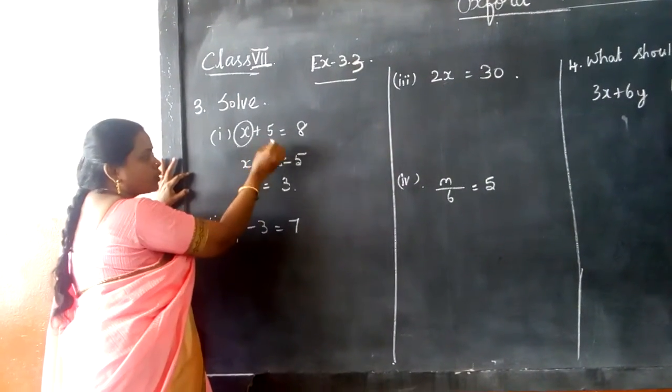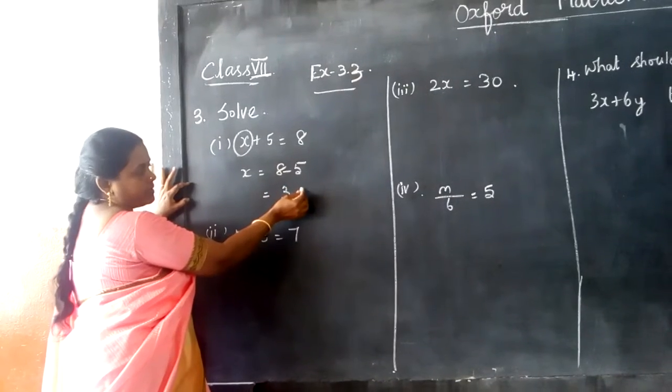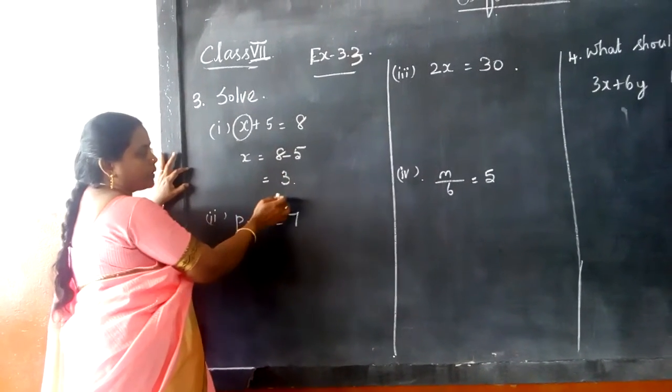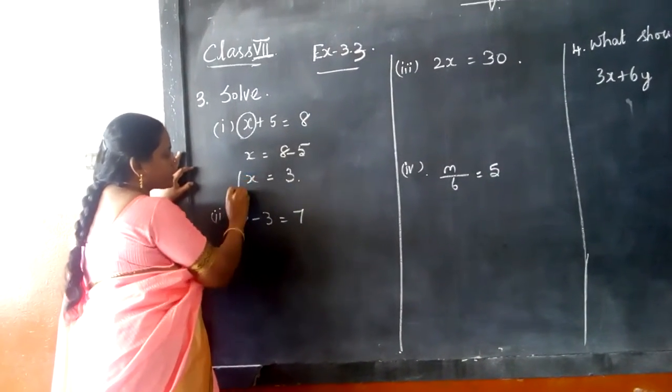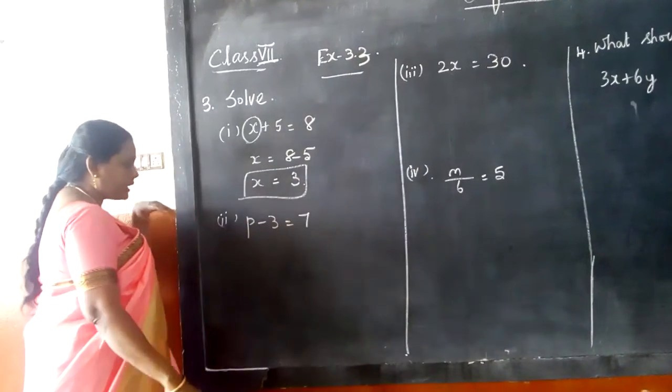So 8 minus 5, when this 5 goes to that side, it will become minus. So 8 minus 5 is equal to 3, so the value of x is equal to 3. Is it clear?